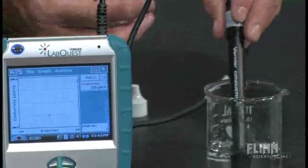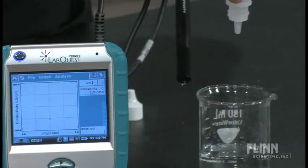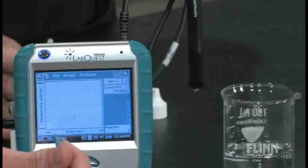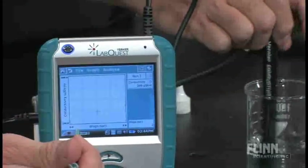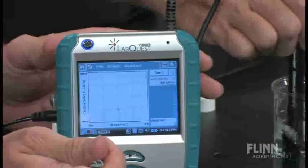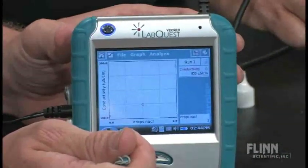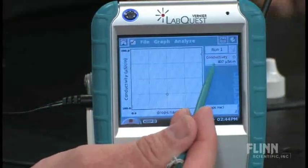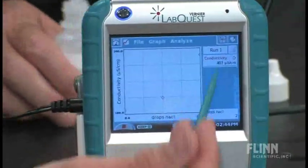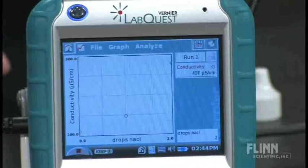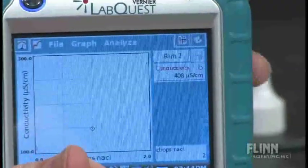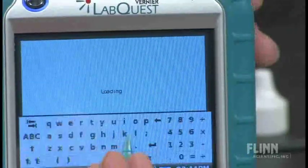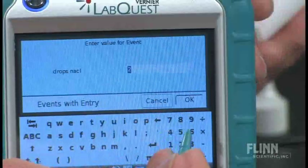And let's put a third drop in. And swirl. And I will keep that. I can see up here in the upper right corner, I can see the meter running. So I can wait until that settles and hit keep. And that's my third drop. We're going to do one more drop after this.